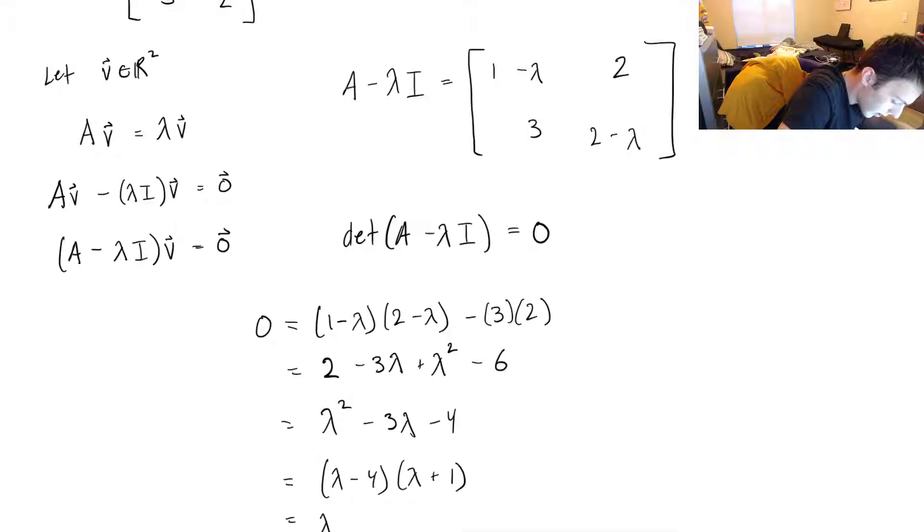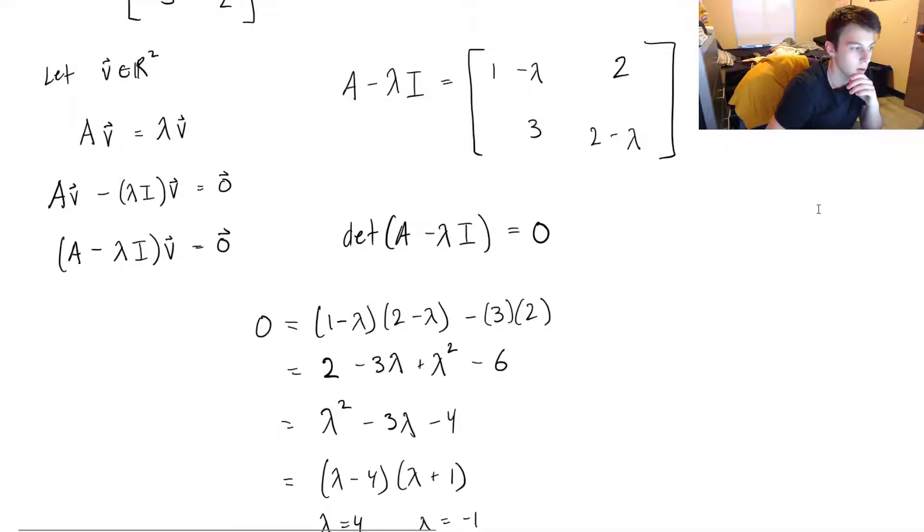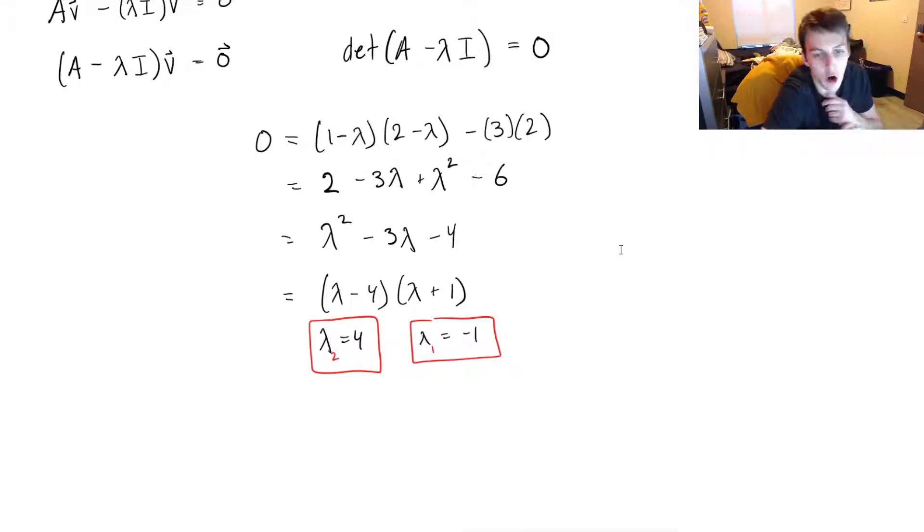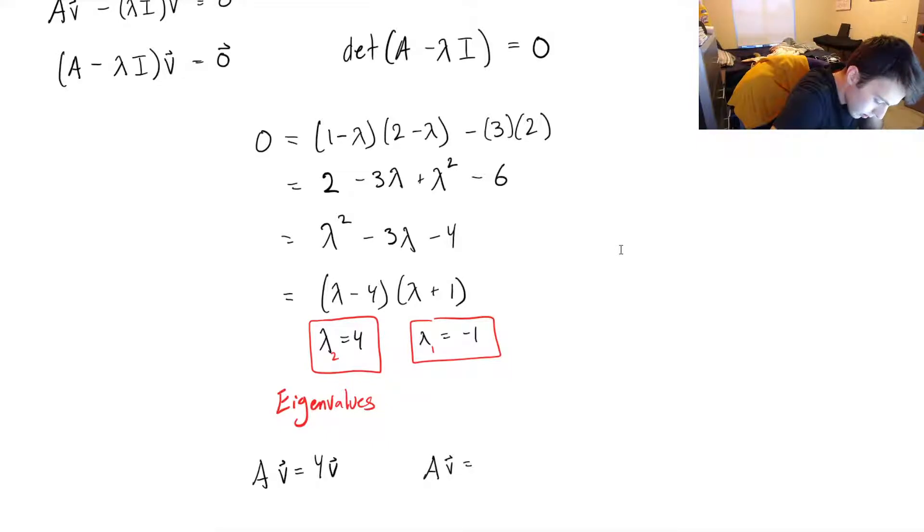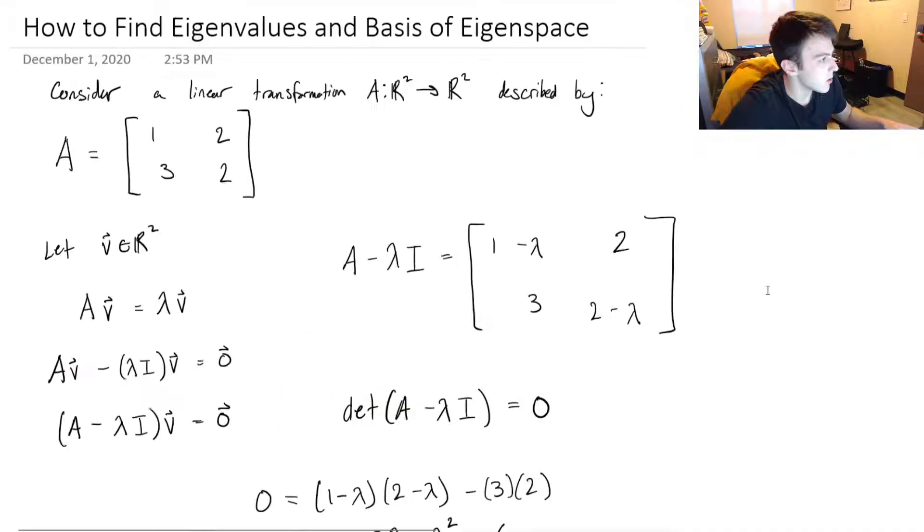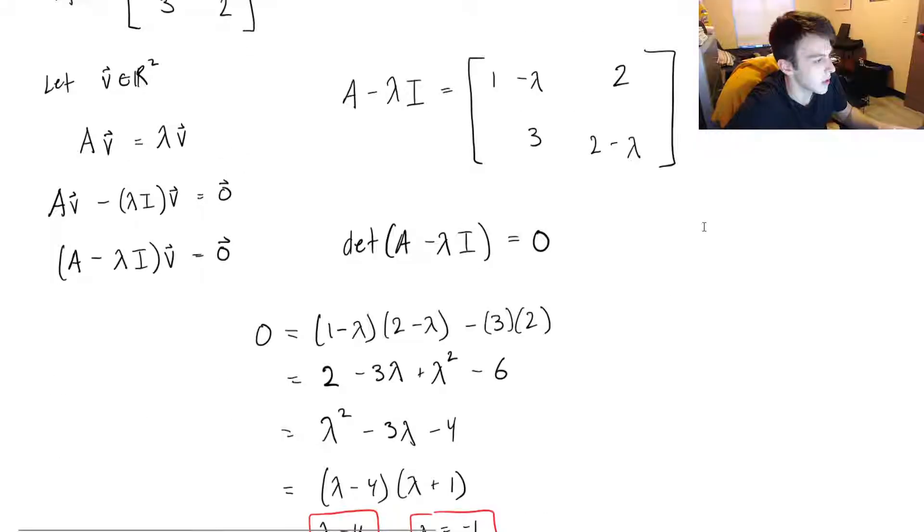So solving this, we have λ equals 4, and we have λ equals -1. So these values here, this being λ₁, this being λ₂, these here are my eigenvalues. So the equation holds true when I have Av equals 4v. This is true. And Av equals -1 times v. We know that that is also true. So that's what this tells us. And what did I title this video? How to find eigenvalues and basis of eigenspace. So we'll do that in this video as well.